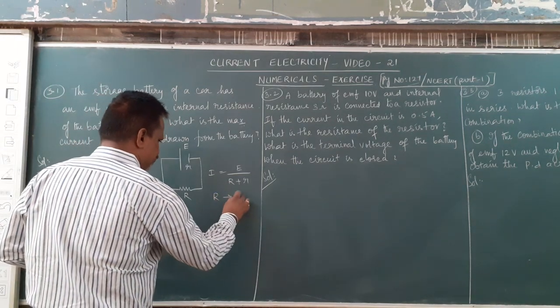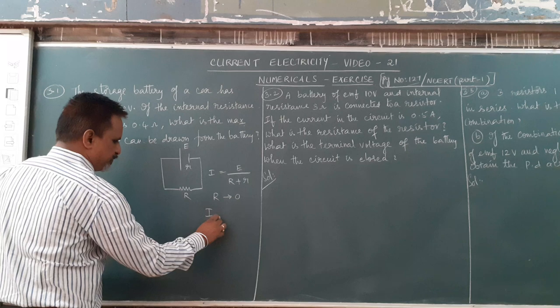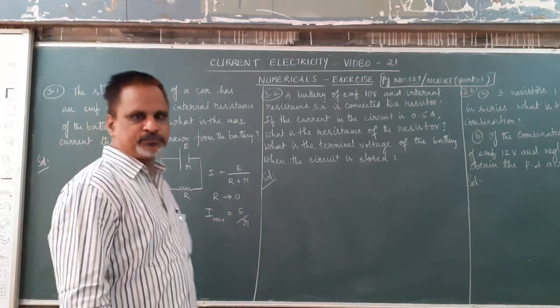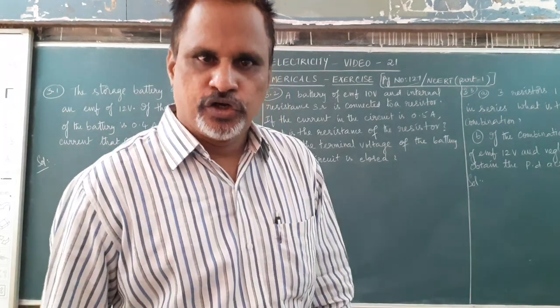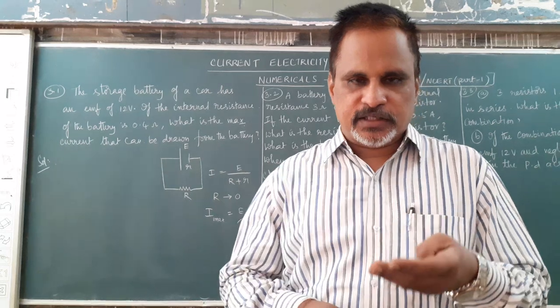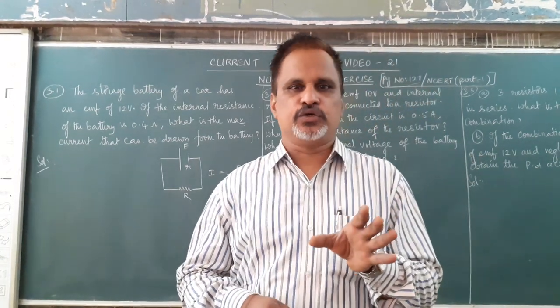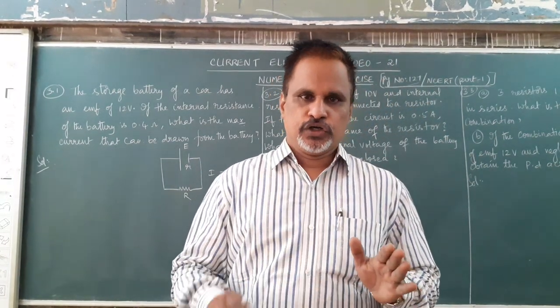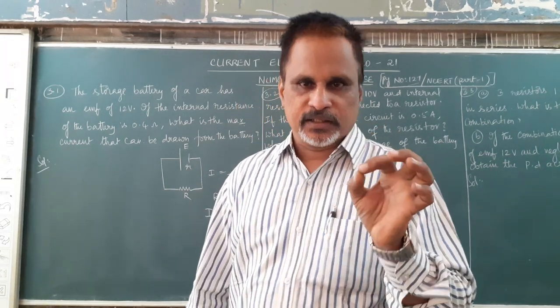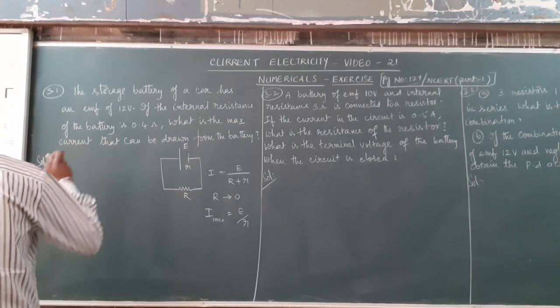When capital R is 0, then current will be maximum. I max equal to E by small r. The current will be maximum when the external resistance in the circuit becomes 0. The only resistance in the circuit will be internal resistance.